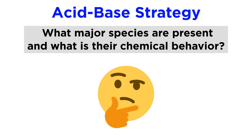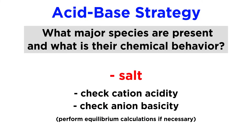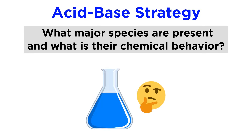If looking at a salt, what can we say about the cation and anion? Might either of them behave as an acid or base? If so, what is the equilibrium that describes their behavior, and are we producing hydronium or hydroxide as a result? By breaking down substances to see what truly is in solution, we are more likely to see what kind of calculation must take place.